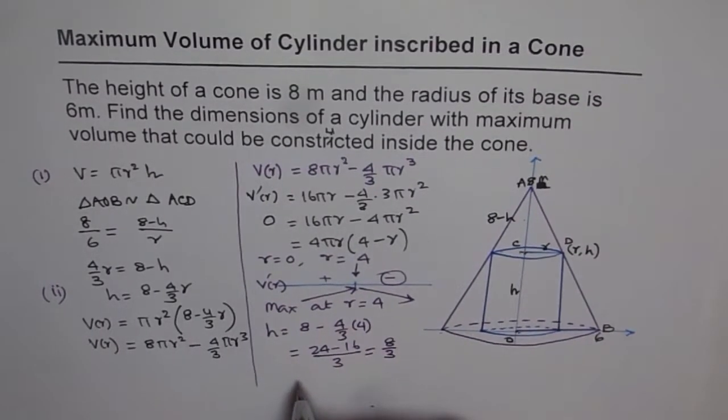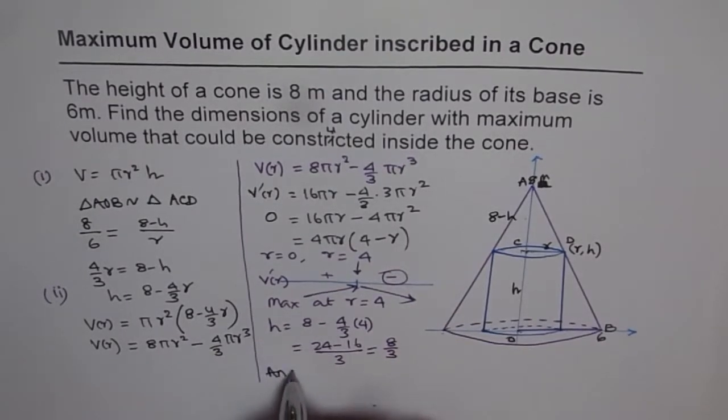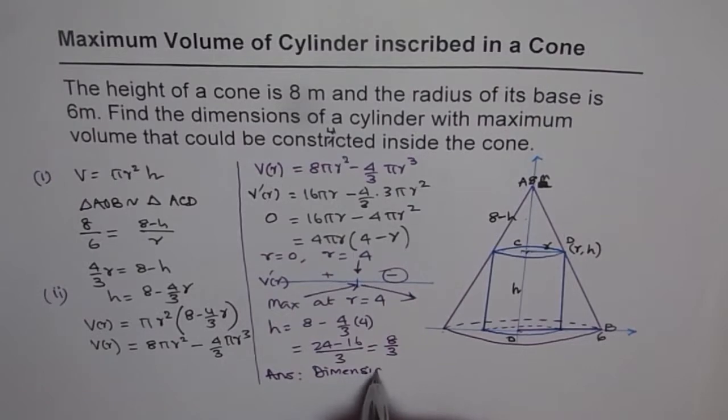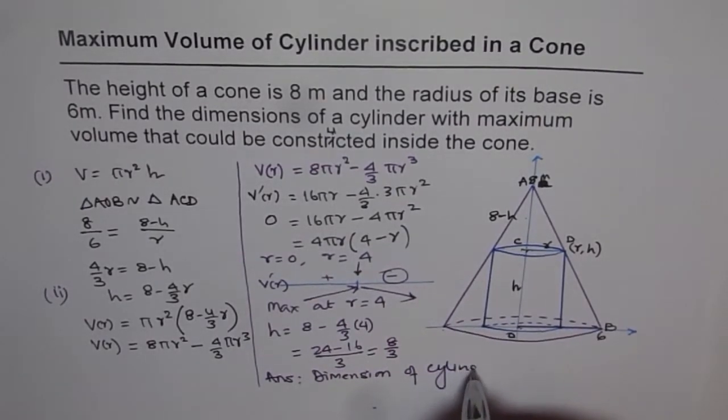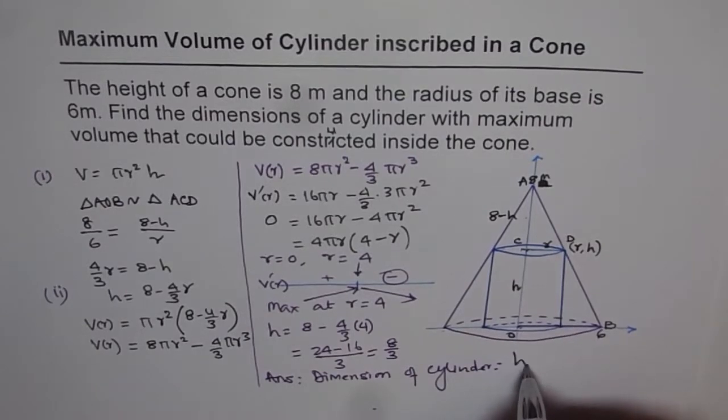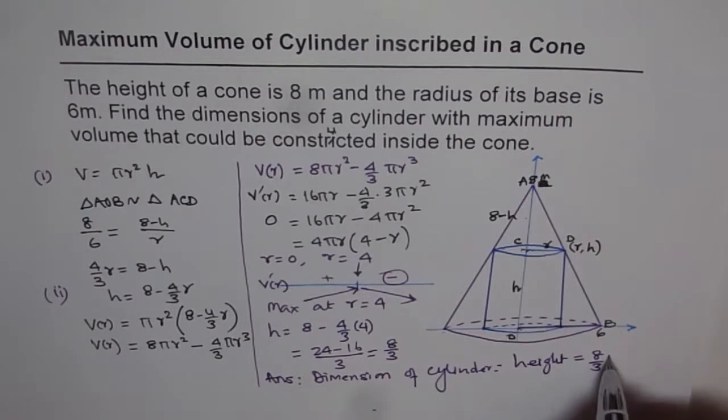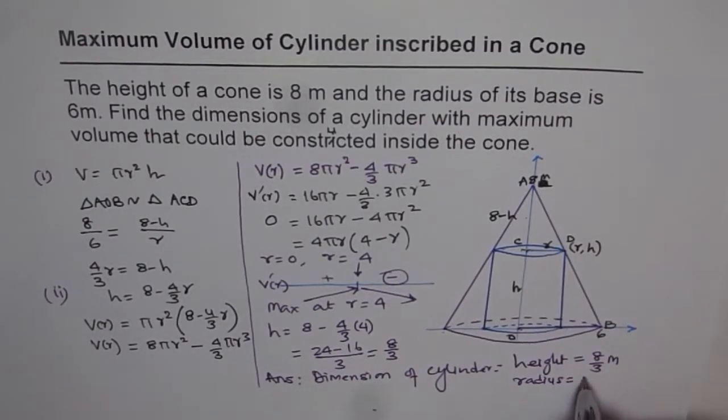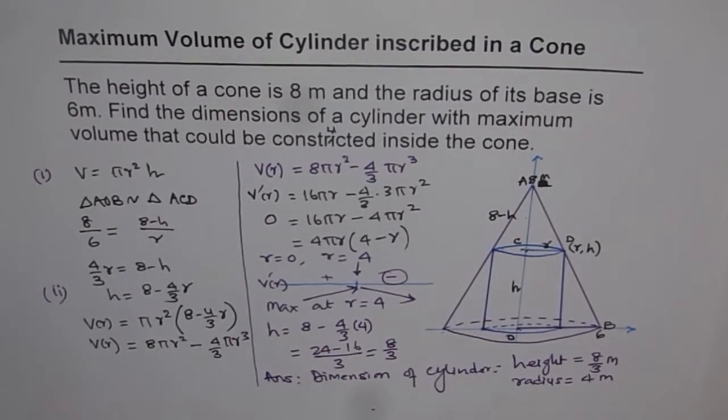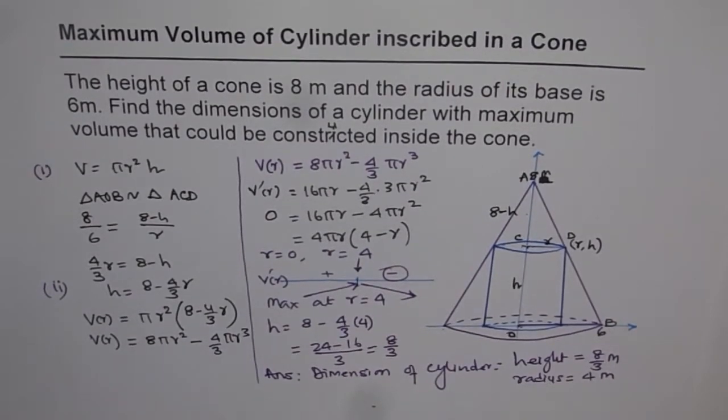So the height is 8/3, and the radius is 4 meters in this case. So we can write down here as our answer, dimensions of cylinder. So it has a height equals to 8/3 meters, and radius equals to 4 meters. So that is the answer. So that is how we are going to do these kinds of questions.